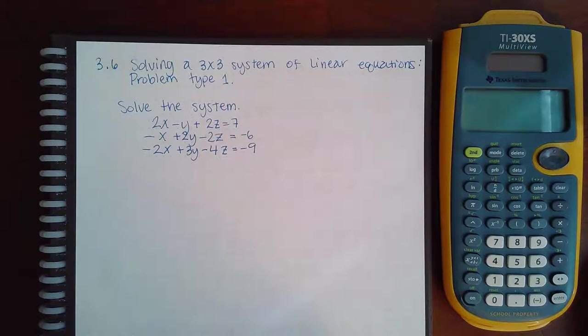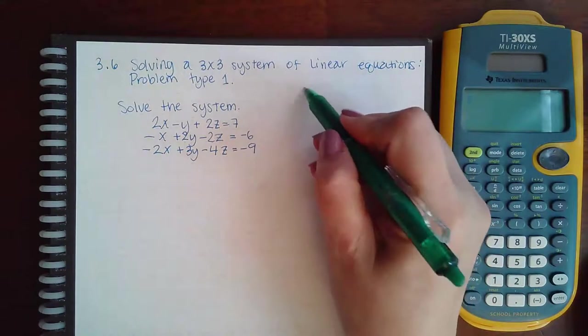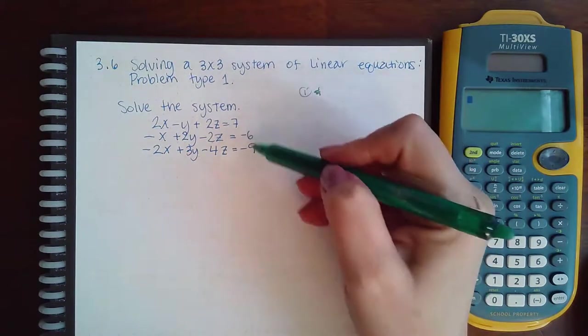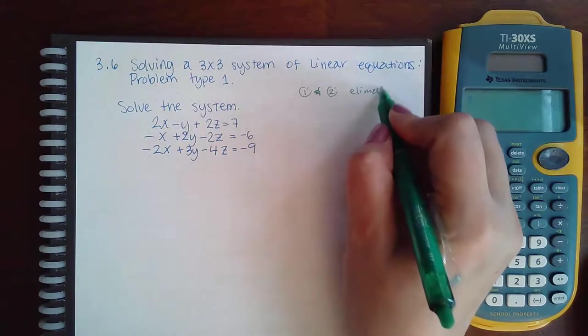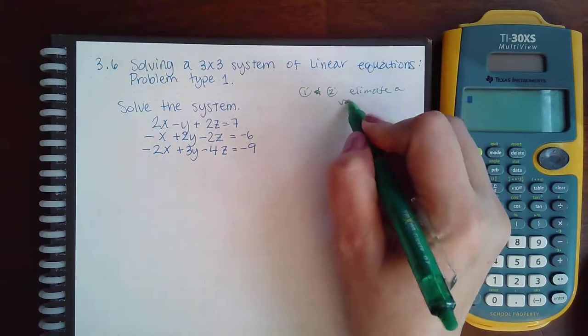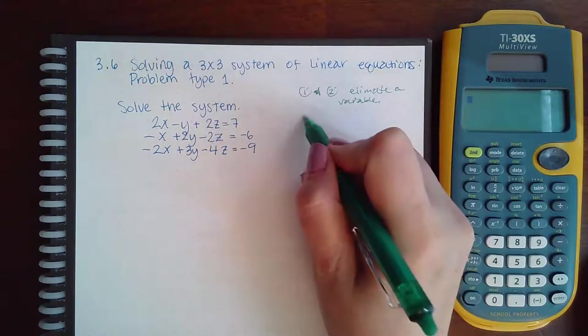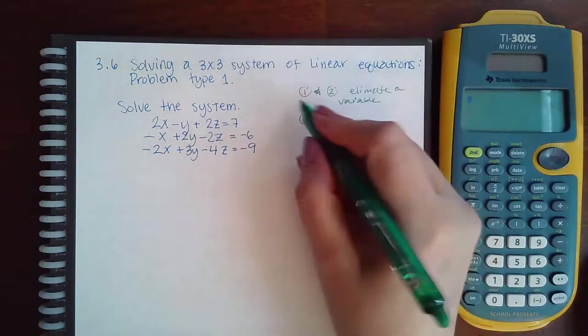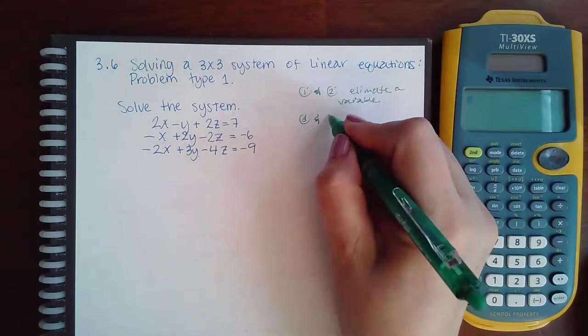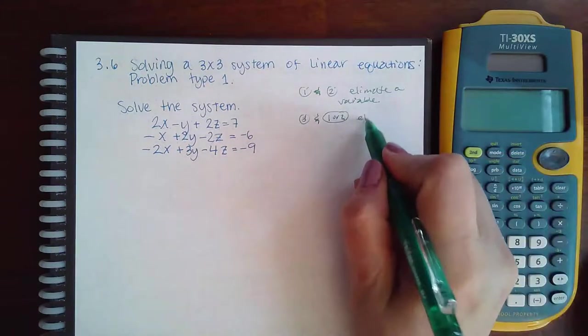So the game plan here when you're solving a 3 by 3 system is that you want to pick two equations, and it doesn't have to be the first, the second, and the third, just two equations, and eliminate a variable. Then you're going to take the third equation and one of these two you pick. It could be the one that's more convenient for you, but you pick one or two, and then you eliminate the same variable.